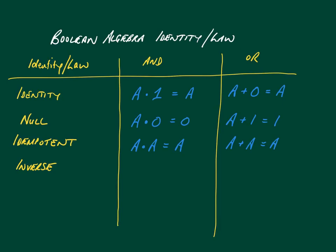With inverse, you're applying negation to one of your inputs. So if we have a AND NOT a, then you're always going to get 0. And if you apply a OR NOT a, you're always going to get 1, because one of the values is going to be 0 and one is going to be 1.